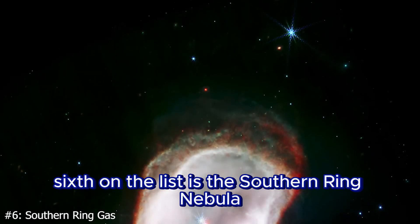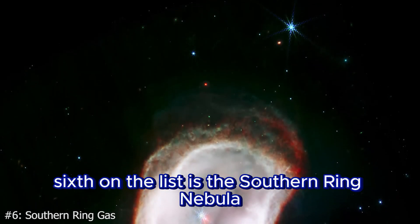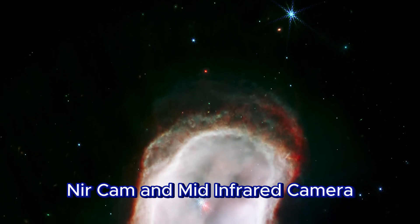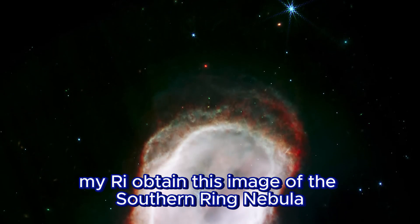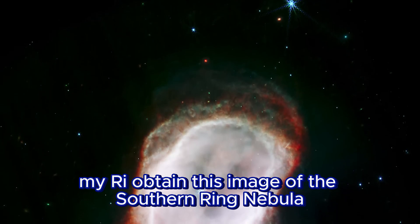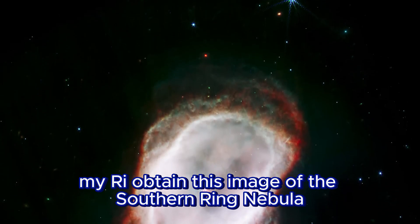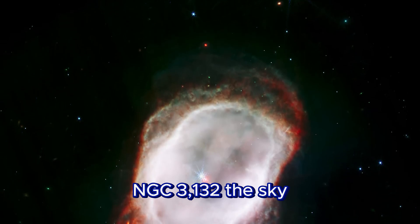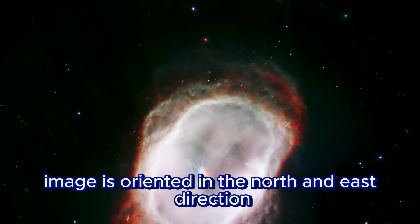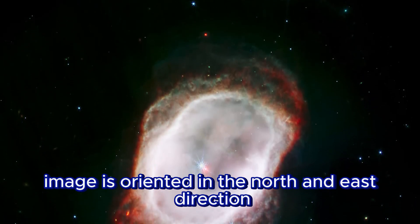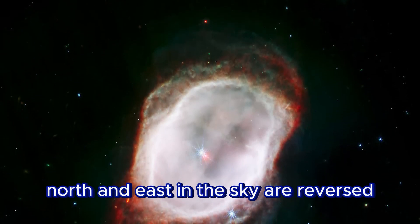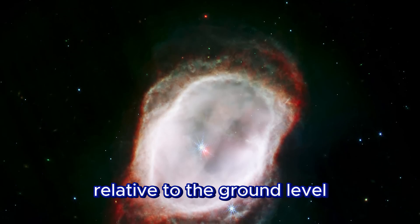Sixth on the list is the Southern Ring Nebula. Webb's Near Infrared Camera and Mid Infrared Camera obtained this image of the Southern Ring Nebula, NGC 3132. The sky image is oriented in the north and east direction. The compass arrows indicate that when viewed from below, north and east in the sky are reversed relative to the ground level.